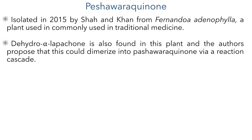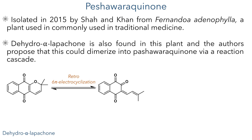They suggest that this molecule could dimerize to form Peshawara quinone via a reaction cascade without any enzymatic catalysis. Their proposed biosynthesis involves a retro-6π electrocyclization that would open the dehydropyrane ring, forming an oxydiene.